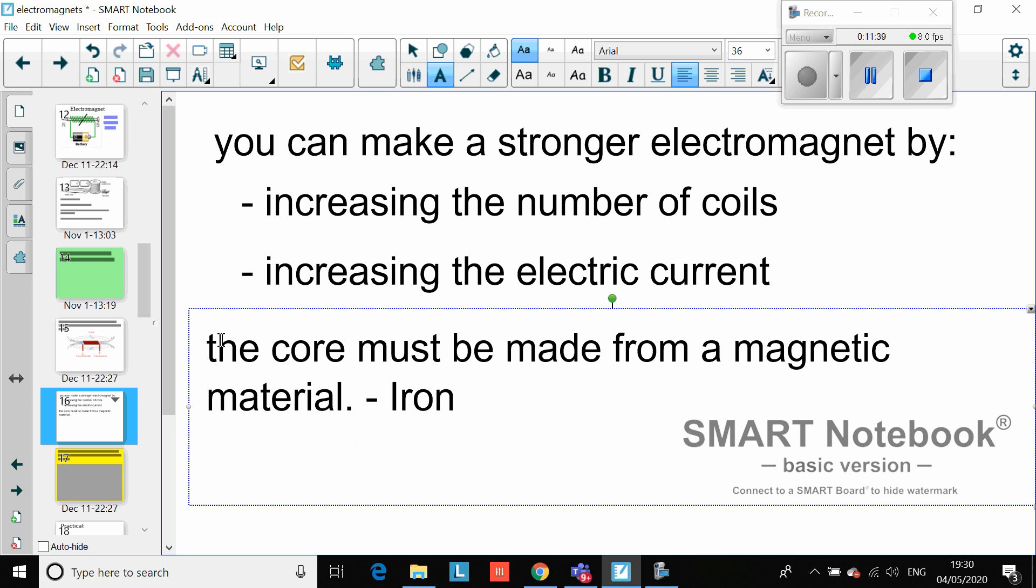Those are: iron, nickel, and cobalt. Those are the only naturally occurring metals which are magnetic. If you had, for example, a core made out of aluminum, it wouldn't work.